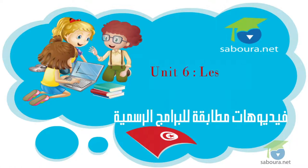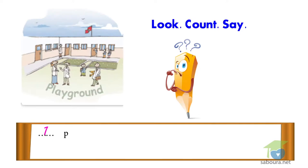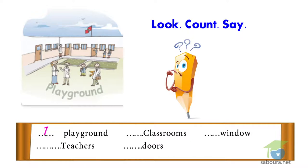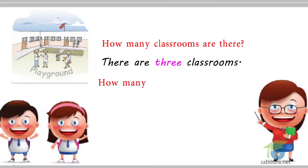Unit 6, Lesson 3: My School. Look, count and say. One playground. Teachers, classrooms, doors, windows. The answer: one playground, four teachers, three classrooms, three doors, six windows. How many classrooms are there? There are three classrooms. How many playgrounds are there? There is one playground.